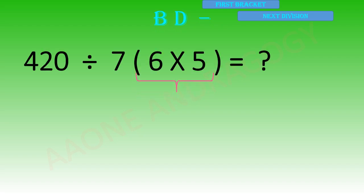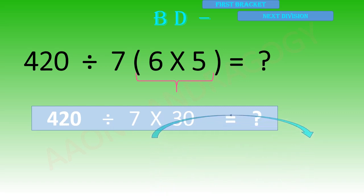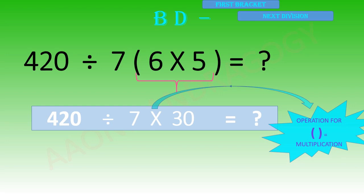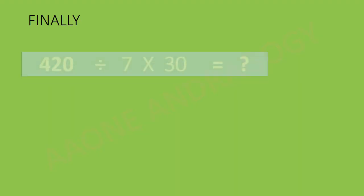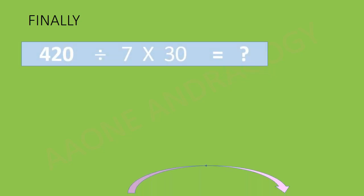The given sum is 420 divided by 7, within the bracket 6 into 5. Let's solve the bracket: 6 into 5 is 30. Now 420 divided by 7 into 30. From this point we need to follow the BODMAS rule.